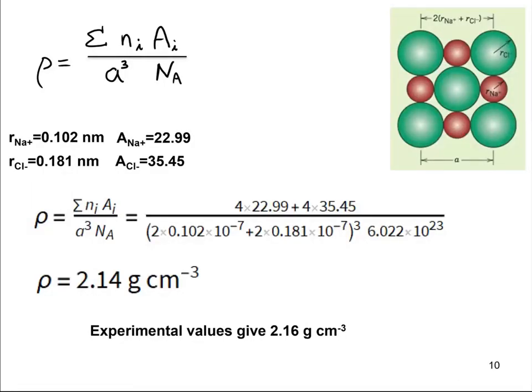We're going to sum over the different number of ions that we have. We said we have 4 chlorides and we have 4 sodiums. So that's what our sum is going to be. n is 4 in both cases. We've got 4 times their atomic weight, so 22.9 for the sodium, and then we've got 4 chlorides and 35.45 grams per mole for the atomic weight of the chloride. So that's the total grams per mole that we have in our unit cell.